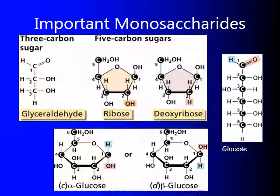Ribose and deoxyribose are also sugars. Deoxyribose — if you've ever taken biology before — is actually the sugar for the 'D' in DNA. Ribose is the 'R' in RNA. So glucose, deoxyribose, fructose, and galactose are all important sugars. They're called monosaccharides, but they are the monomers of carbohydrates.